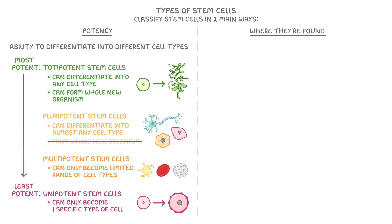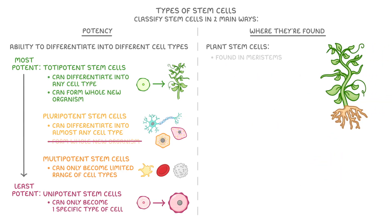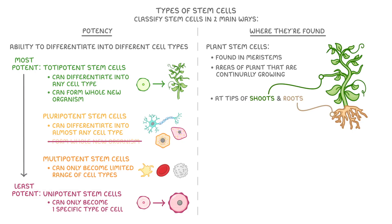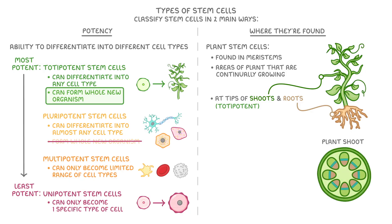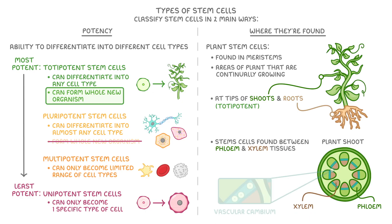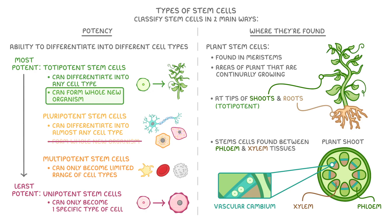Importantly, it's not just animals — plants have stem cells too, and these are found in meristems, which are the areas of the plant that are continually growing. Some meristems are found at the tips of shoots and roots, and these can be considered totipotent because they have the potential to form a whole new organism if they're separated from the parent plant. If we look at this cross-section through a plant shoot, we can see stem cells also found between phloem and xylem tissues, in a region called the vascular cambium. These cells are pluripotent, meaning they can differentiate into almost any cell type, but mostly they form new phloem or xylem as the plant grows.